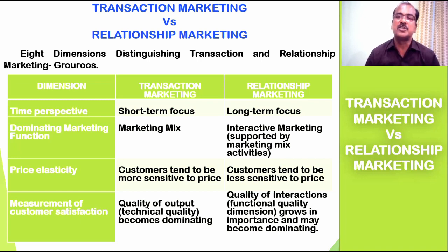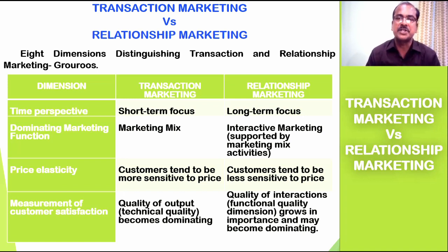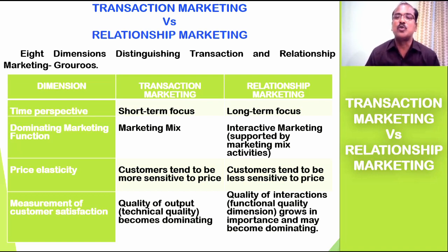Whereas with regard to relationship marketing, it's a long-term focus. Perhaps the majority of services offered by sellers start only after the product or market offering is sold to a customer. The second dimension of difference is dominating marketing function. In transaction marketing, the marketing mix is everything — the construction of the four P's. Whereas in relationship marketing, it speaks about interactive marketing, though the interactive marketing between buyers and sellers is greatly supported by marketing mix activities.